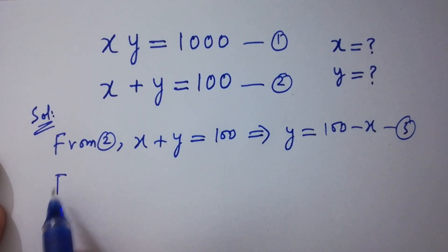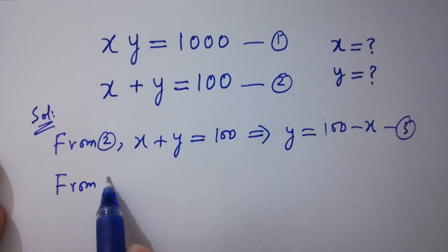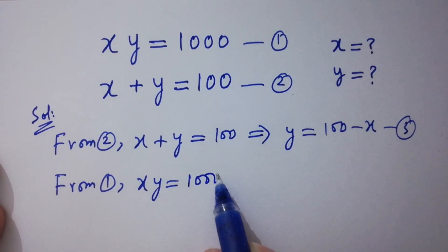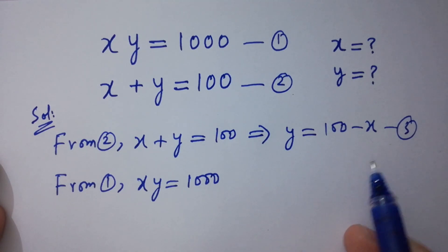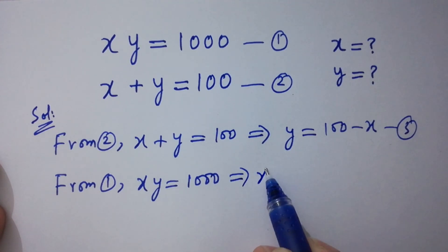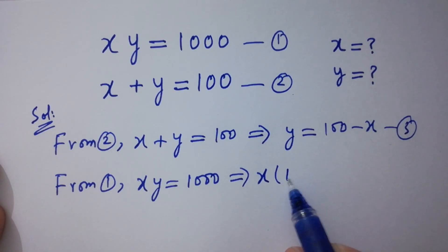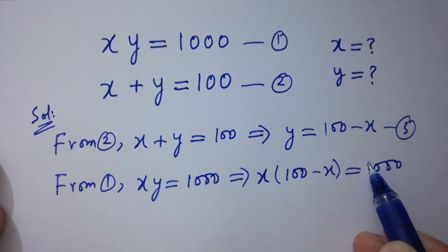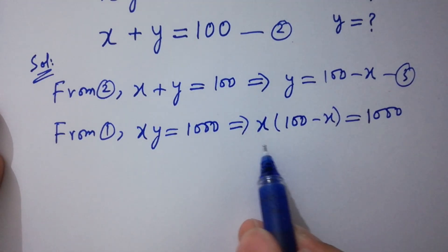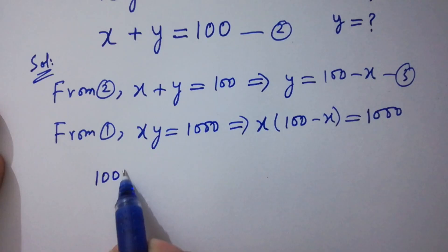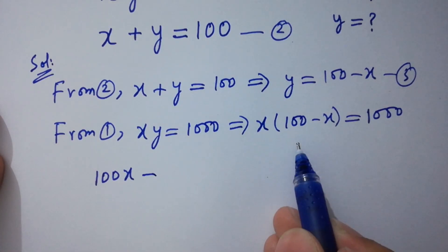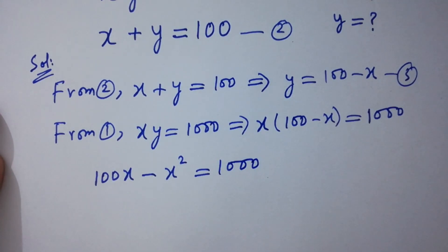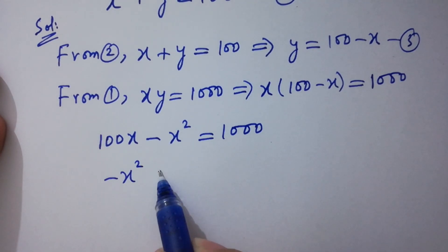Now, from the first equation, xy equals 1000. Put the value of y: we have x times (100 minus x) equals 1000. Simplify this: 100x minus x squared equals 1000.